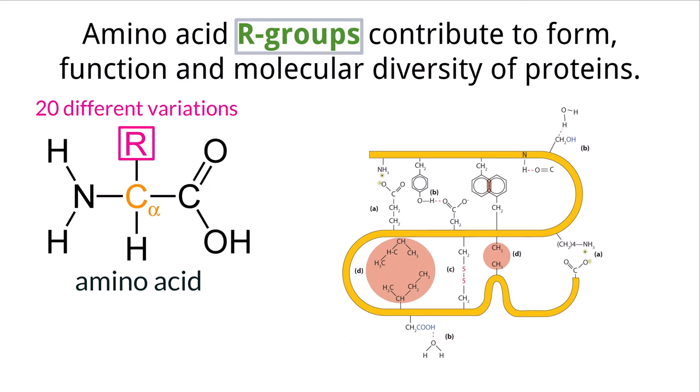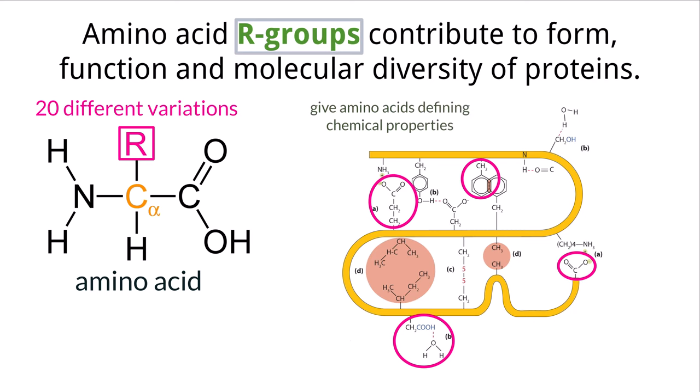Of all of the components of an amino acid, R groups are the most important because they give each amino acid different defining properties. For example, R groups can be either hydrophilic or hydrophobic, which dictates how they interact with other R groups that are part of the amino acid chain.